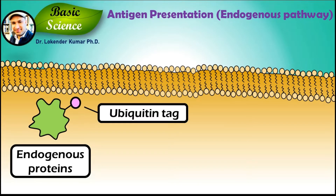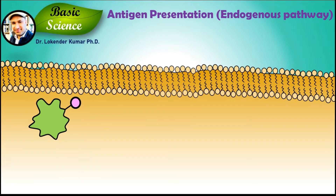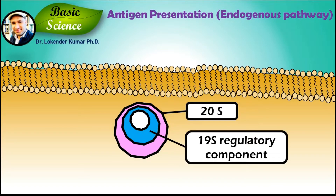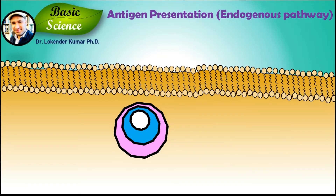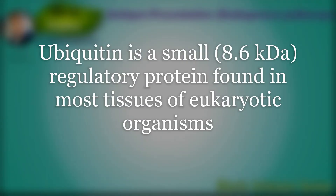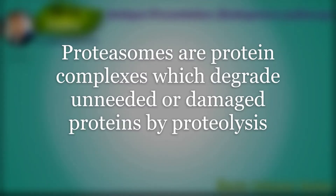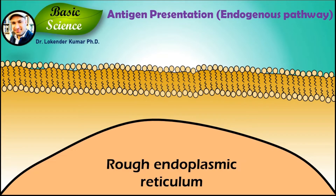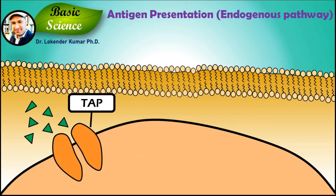The pathway of antigen presentation starts with ubiquitin tagging. The endogenous protein is first tagged with a small protein called ubiquitin. This ubiquitin-protein complex enters a proteasome. The proteasome is a protein complex of 20S and 19S regulatory components. The protein passes through a narrow channel at the 19S unit, which cleaves the protein body using ATP-dependent proteolysis.